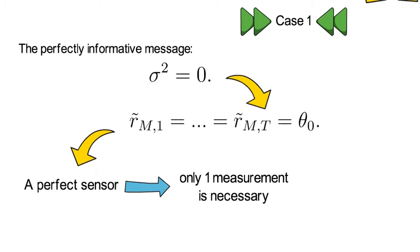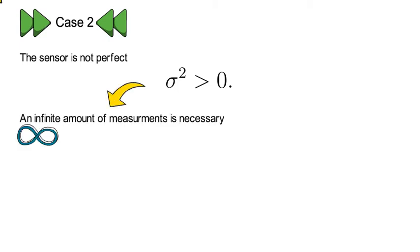So let's turn to case two. Now we assume that the sensor is not perfect at all, meaning sigma square is larger than zero. In that case, you need an infinite amount of measurements to reveal the original signal.